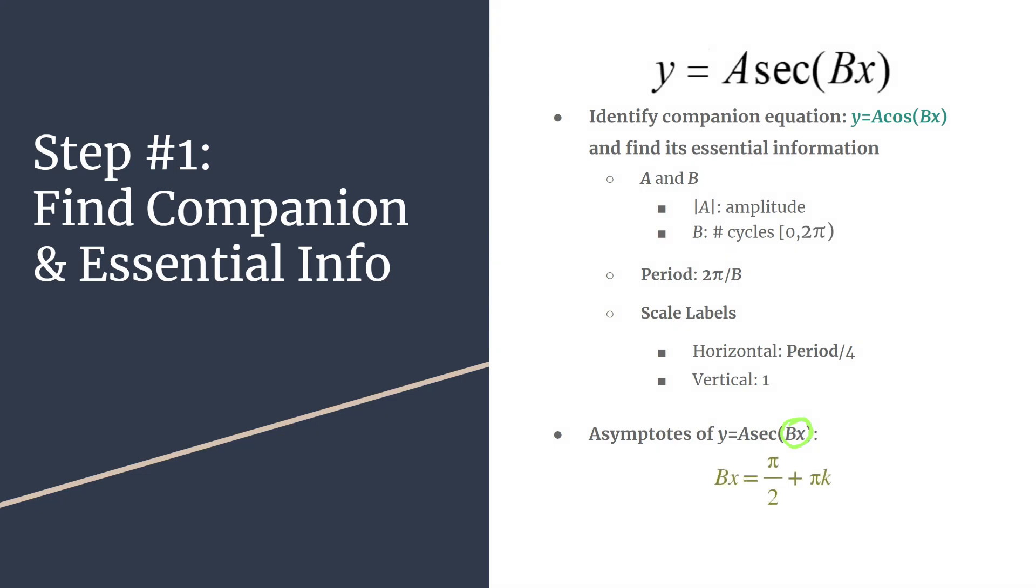So that's at pi over two plus pi K. So that'll look like this. And then all you have to do to find the adjusted asymptotes for whatever graph you're working with is solve for x. So you'll just divide every term by B. And do note that K is going to be an integer. And by plugging in different integers, you'll get different asymptotes for your graph. And we'll look at that in a lot more detail in our later worked out examples.